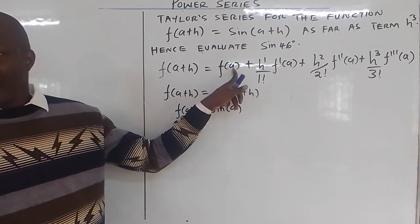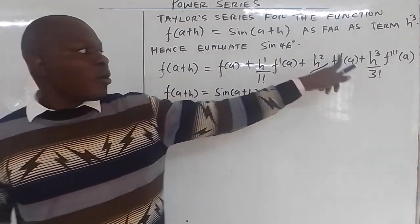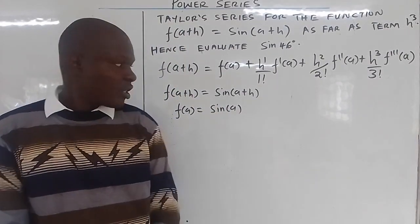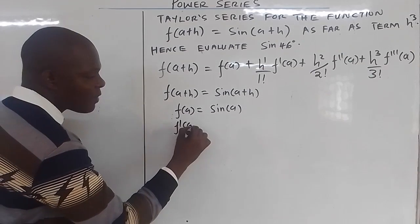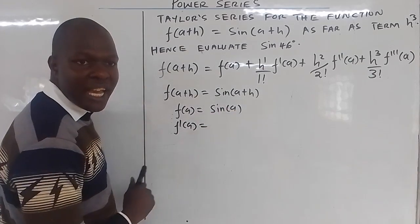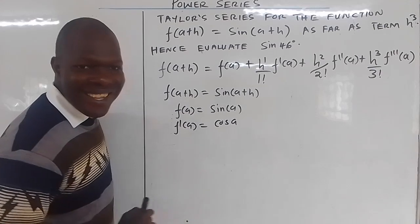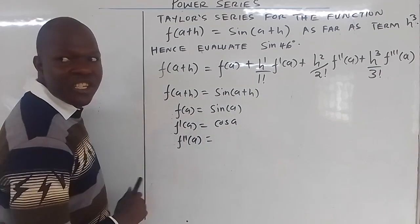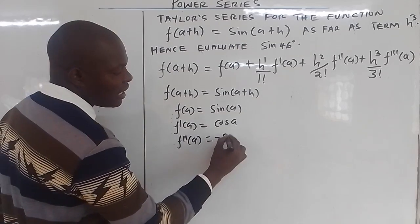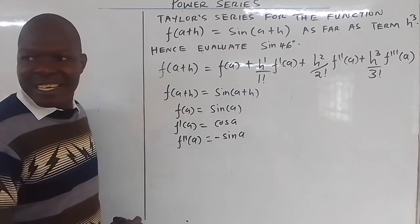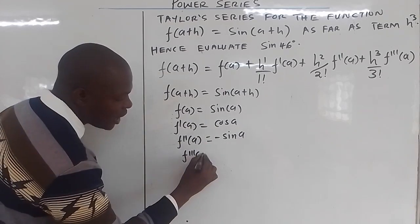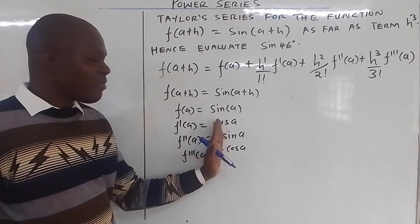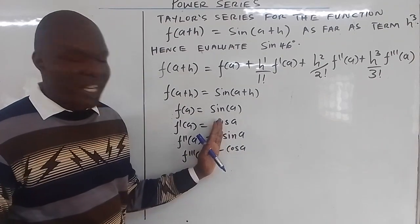We already have f(a). Now we want f'(a), f''(a), and f'''(a). If you differentiate sin(a), you get cos(a). If you differentiate cos(a) again for the second time, you get negative sin(a). If you differentiate negative sin(a) for the third time — you put negative outside, differentiate sin(a) to get cos(a) — so you get negative cos(a).